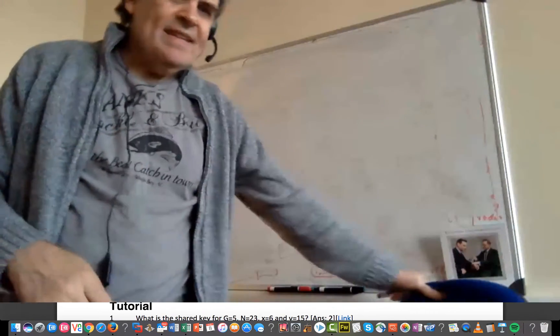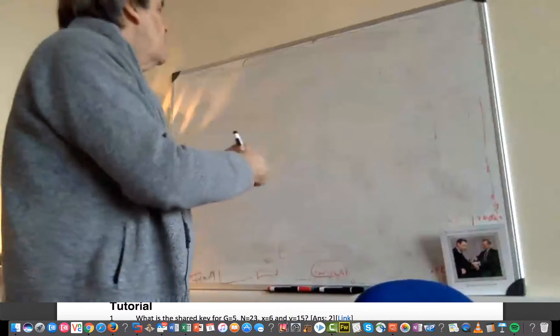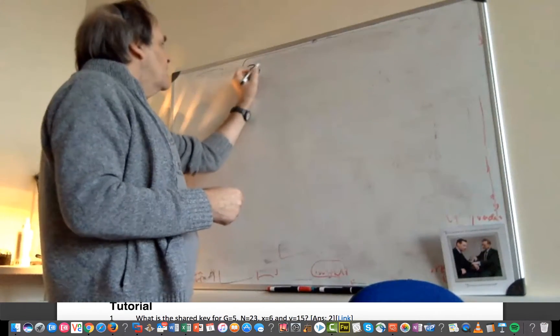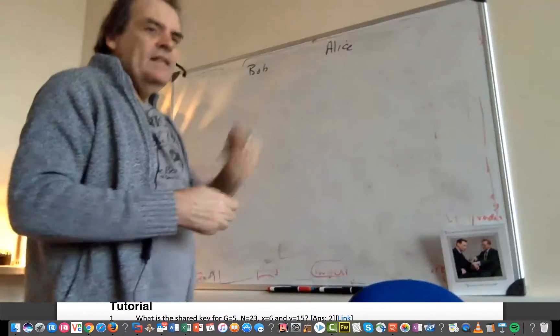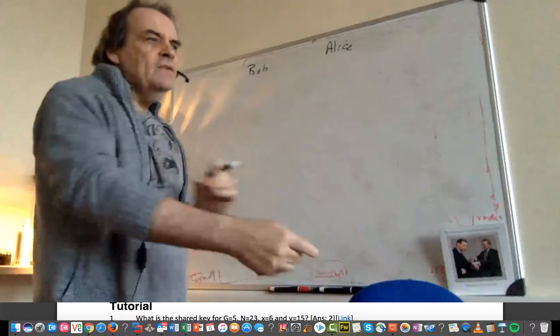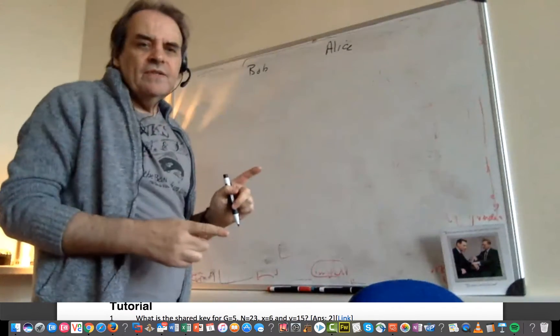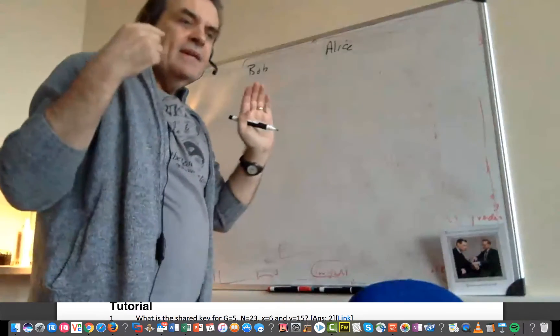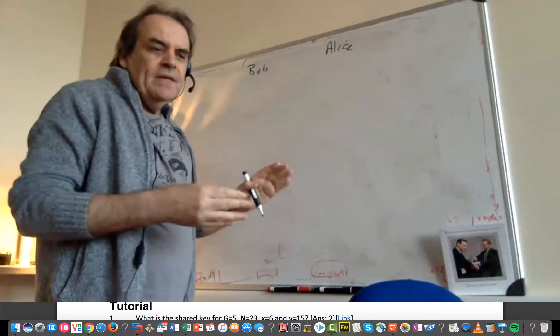Right, so I'm going to explain the Diffie-Hellman method. So one of the problems that we have in cryptography is how we can generate a shared secret key. So if we start off with Bob and Alice, what we need to do is for Bob and Alice to agree on the same secret key.